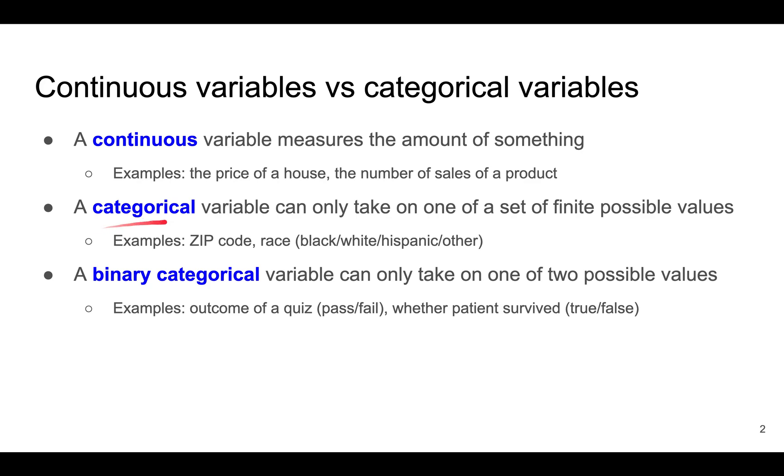On the other hand, a categorical variable takes on a set of finite possible values. For example, zip codes are usually finite, and race might be finite.